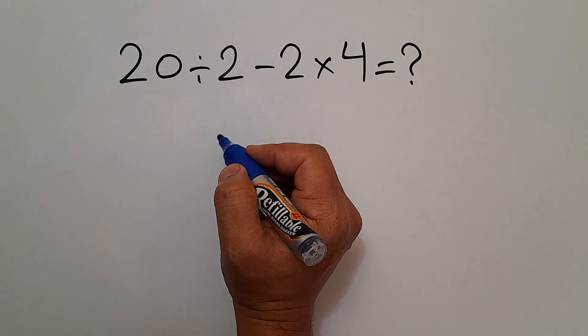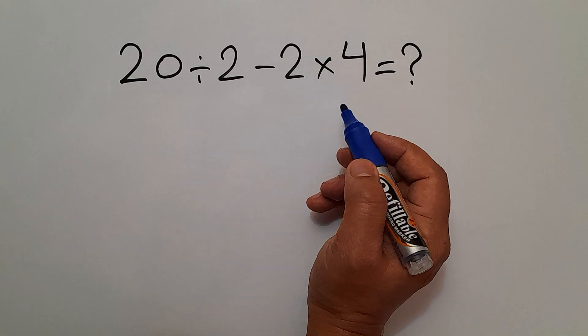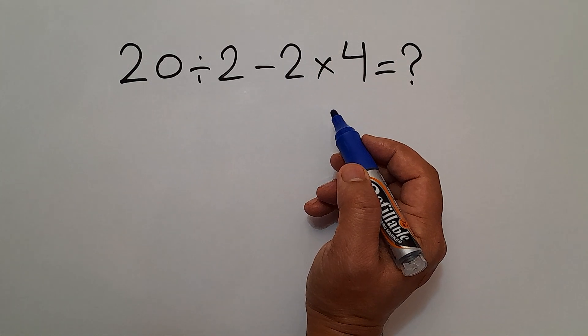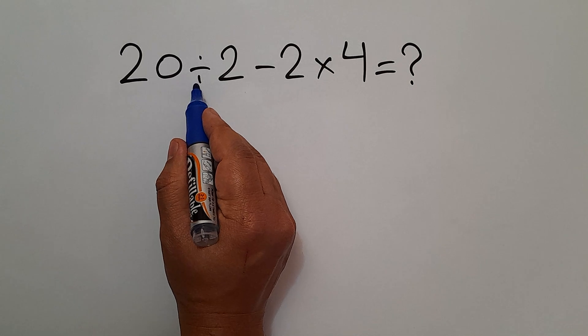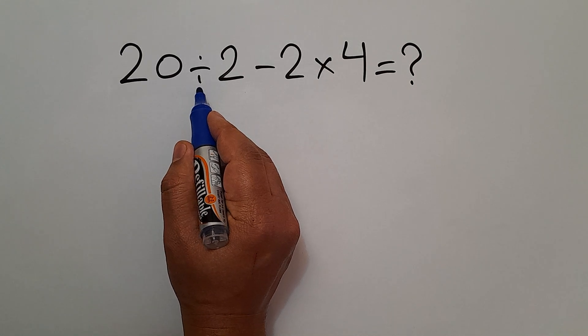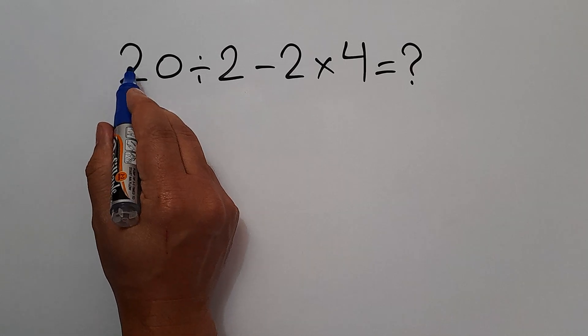So here, we first do this division or this multiplication. As we know, multiplication and division have equal priority. And we work from left to right. So we first handle this division.